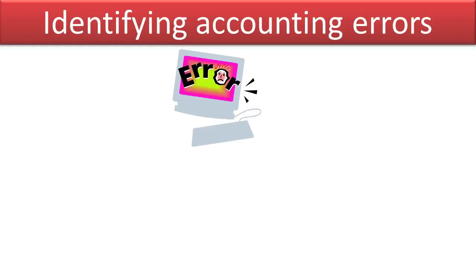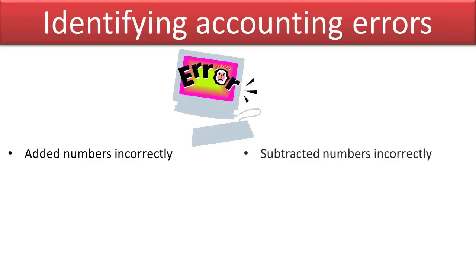Errors can come into your accounting records for a number of reasons. For example, maybe we added numbers incorrectly, we subtracted numbers incorrectly, we added when we should have subtracted, or we subtracted when we should have added.